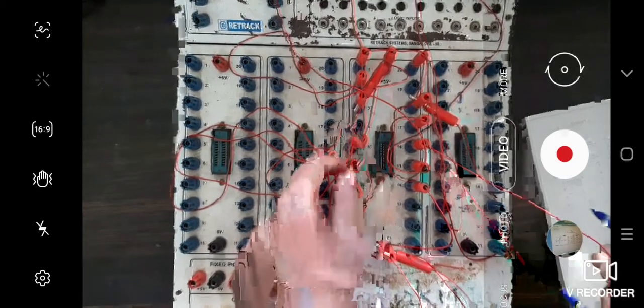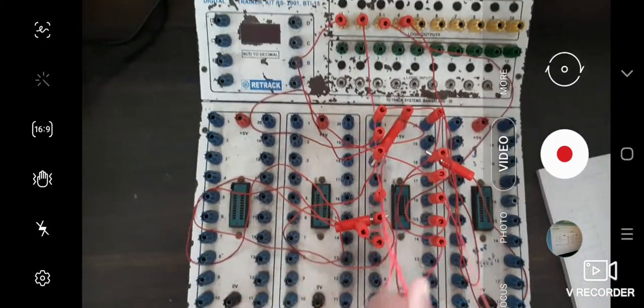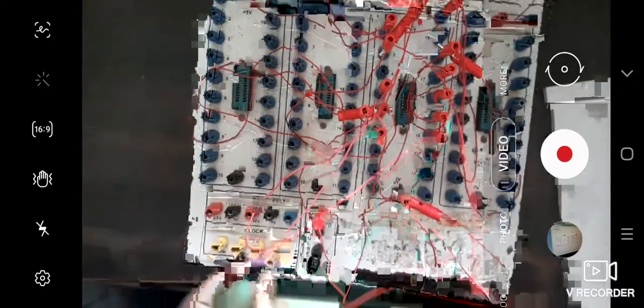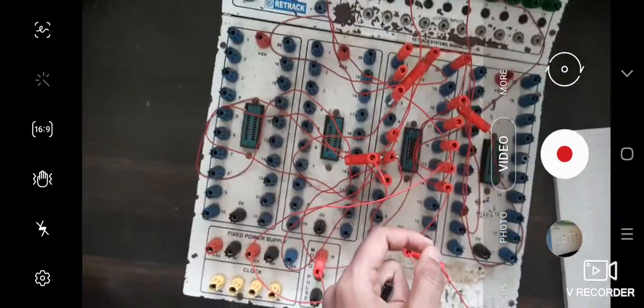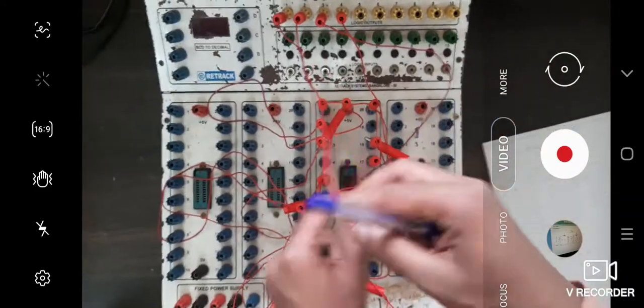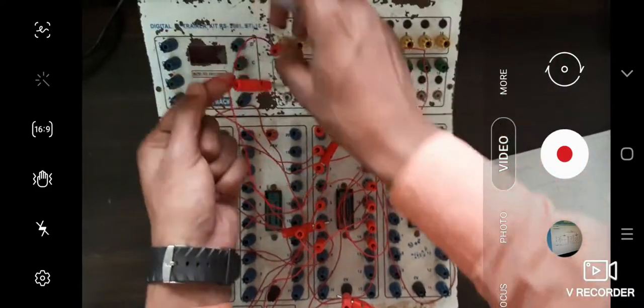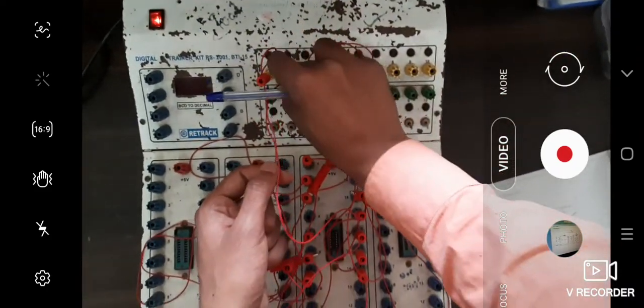Next, pin number 5 is connected to VCC. Next, pin numbers 11, 8, 9, 12 are connected to the output lines. These are the output lines where I am getting the outputs.